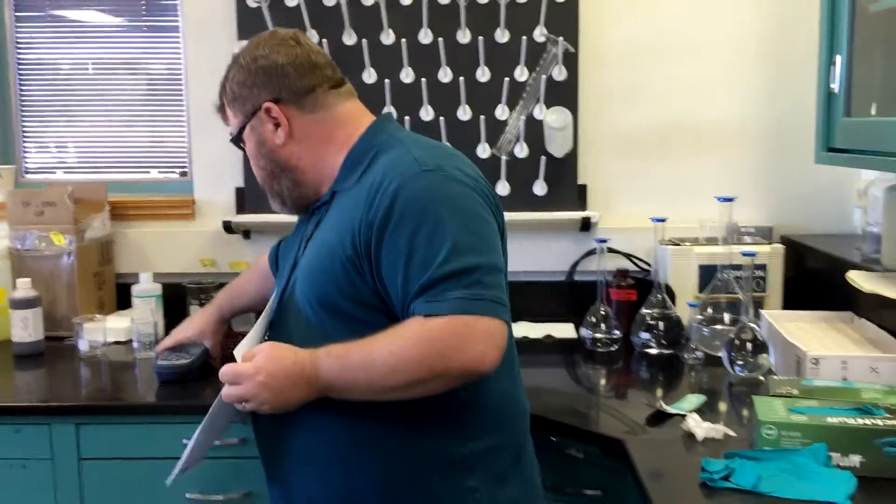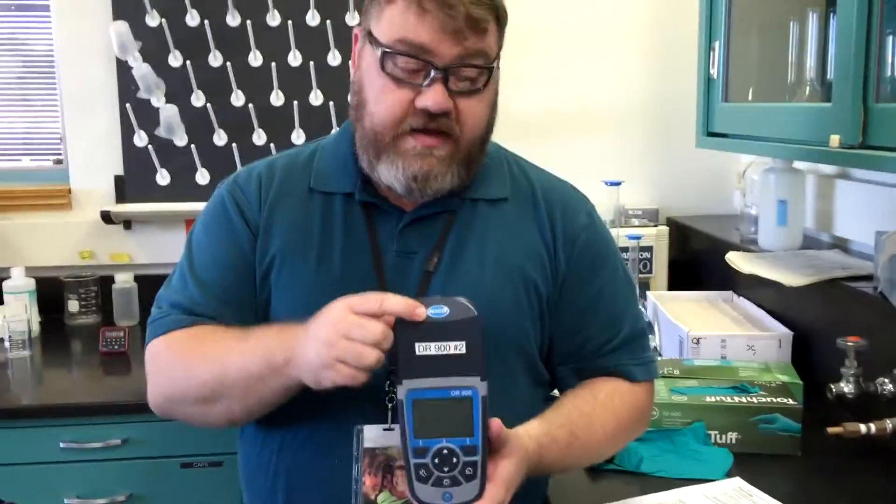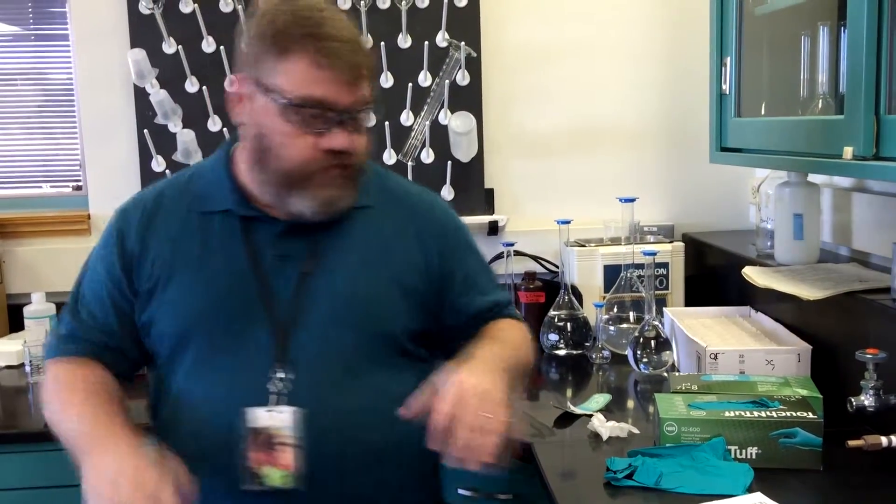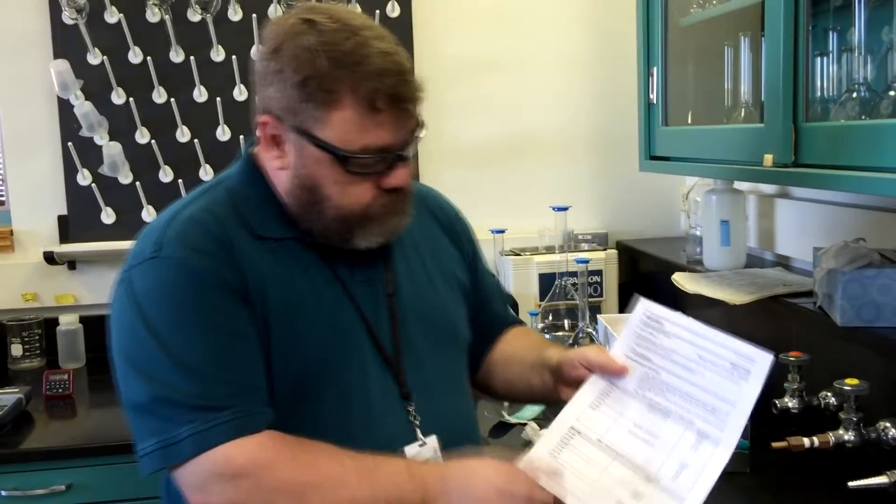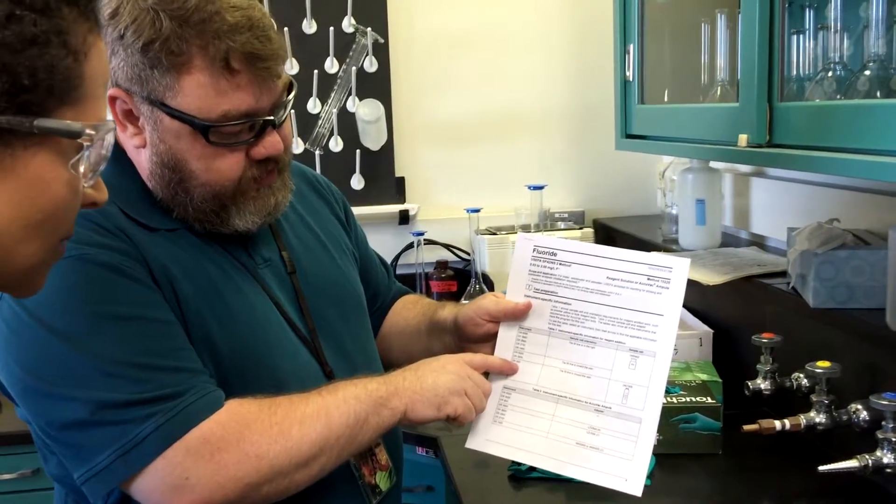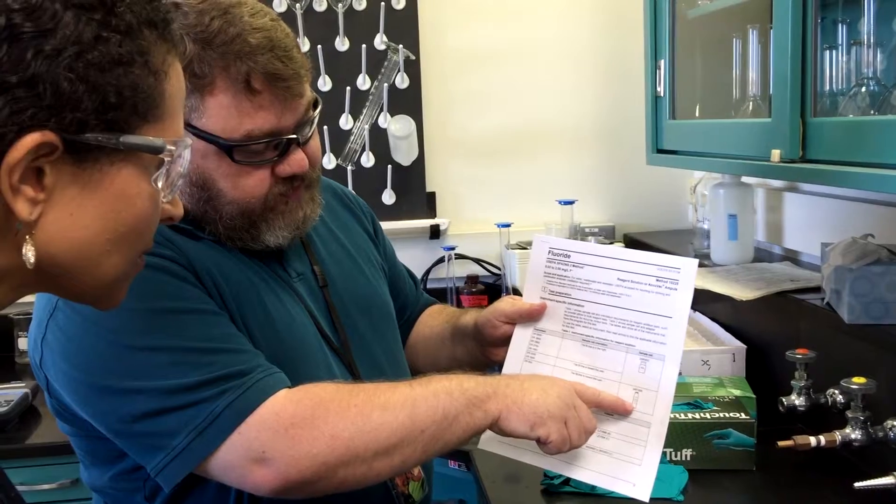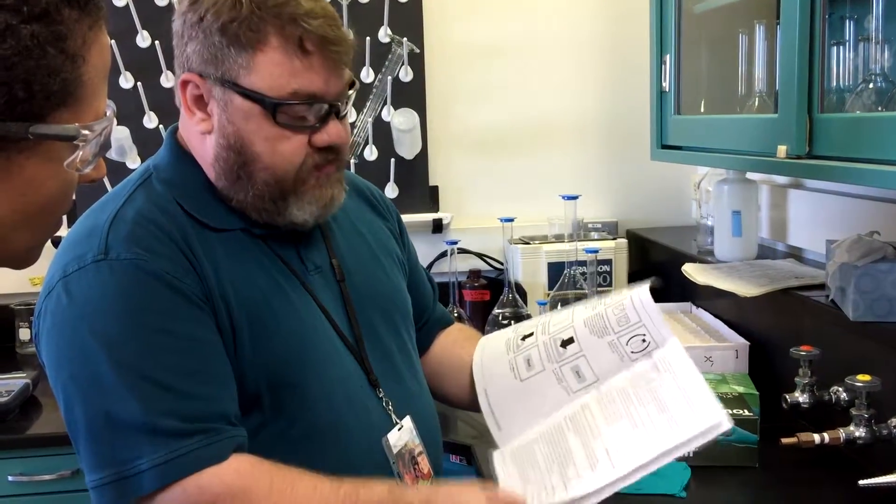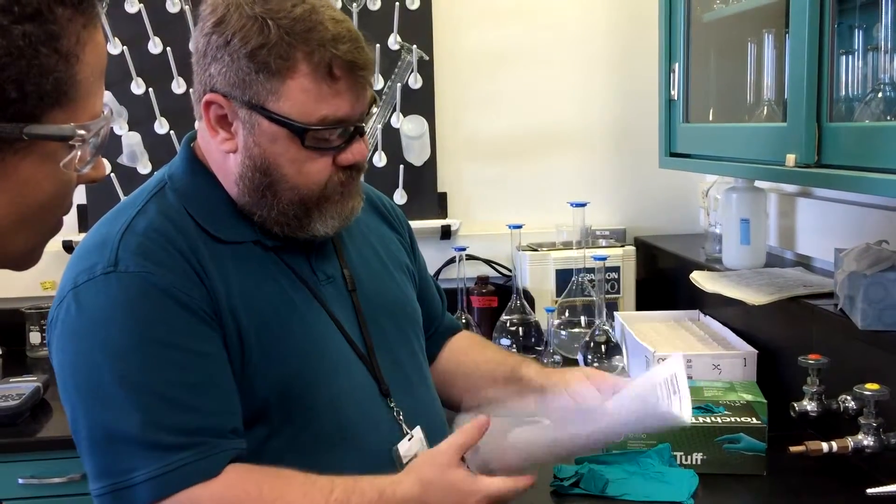We're going to be analyzing fluoride content by a SPADNS method. This is by a company called Hach, H-A-C-H, pronounced Hach, a company out of Loveland, Colorado. We're doing the method for the DR 900, and this is the cuvette that we'll be using.